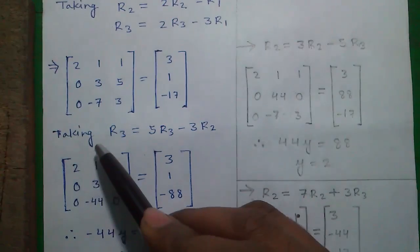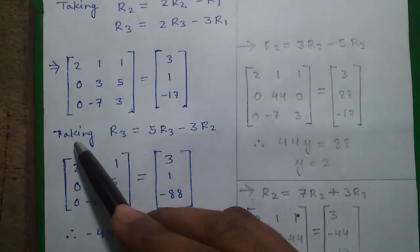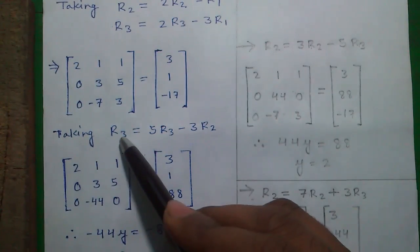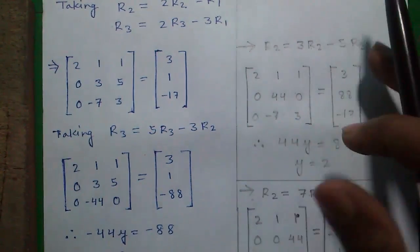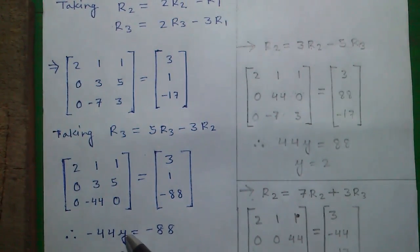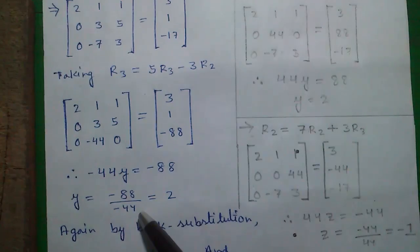This is called the column of X, this is the column of Y and this is the column of Z. So if we get two zeros in column of X and column of Z and one number in column of Y, we can find out the value of Y from that. So we can write minus 44Y equals to minus 88. So Y equals to minus 88 divided by minus 44 equals to 2.